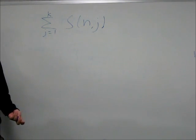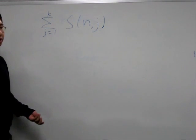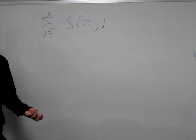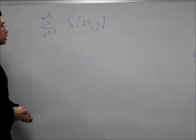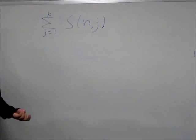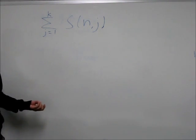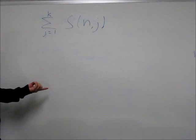aka the number of boxes that aren't empty, can be anywhere from 1, which is everything is put into 1 box, to k, in which everything is put into all k boxes.